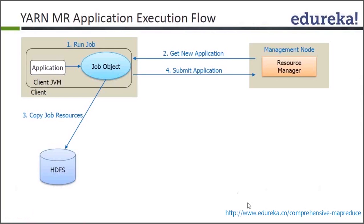Step one: you have a client JVM — the client is somebody who is outside the cluster. He would submit a job by saying 'Hadoop jar, the name of the jar file' and pressing enter. When the job is submitted, it goes to the resource manager, which is the management or master node, to get the new application ID — that's the job ID.